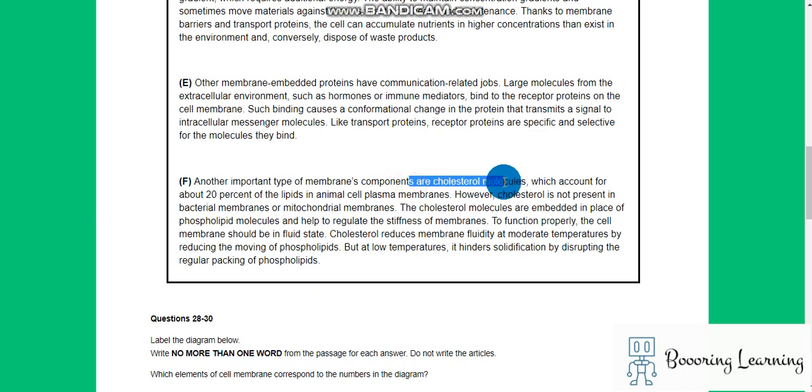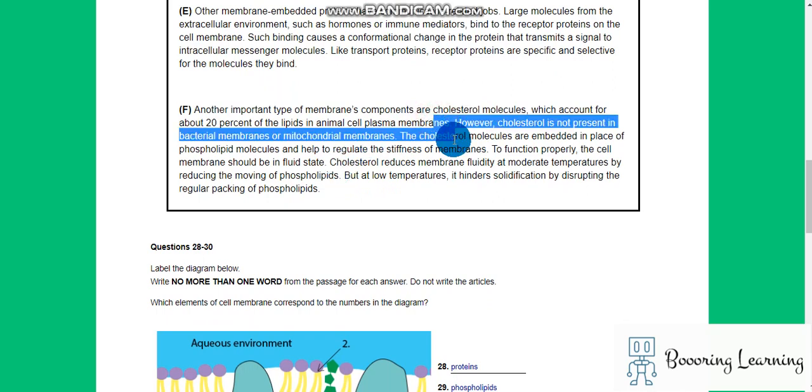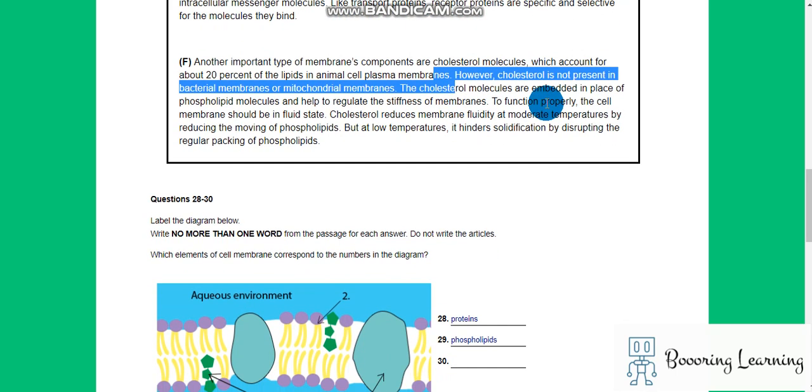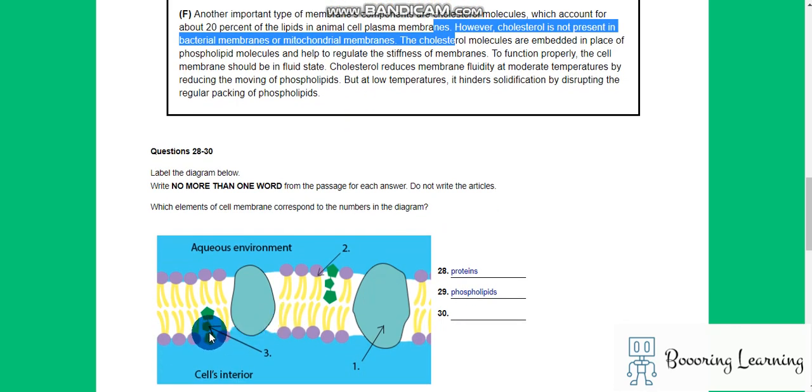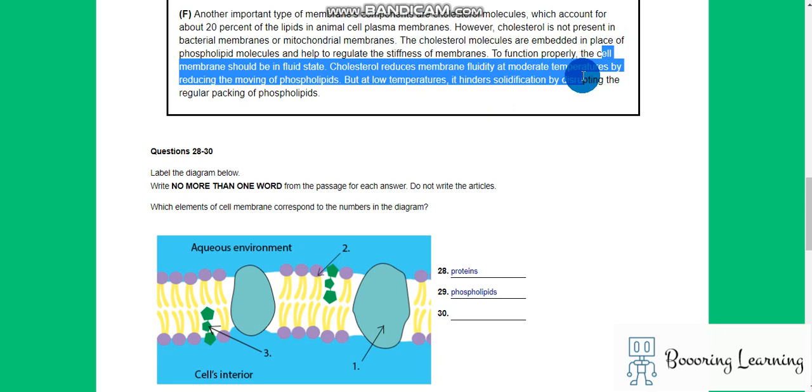Another important type, cholesterol molecules which account for about 20% of the lipids in animal cell plasma membranes. However, cholesterol isn't present in bacterial membranes or mitochondrial membranes. The cholesterol molecules are embedded in place of phospholipid molecules and help to regulate the stiffness of membranes. To function properly the cell membrane should be in fluid state. Cholesterol reduces membrane fluidity at moderate temperatures by reducing the moving of phospholipids. So cholesterol.